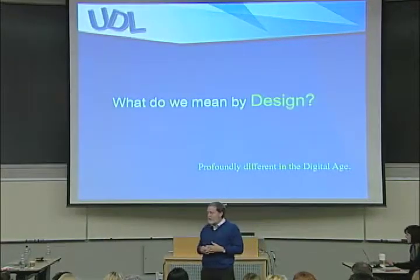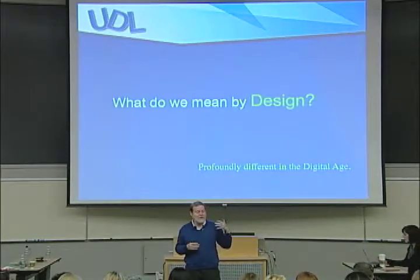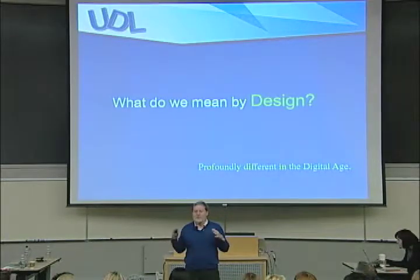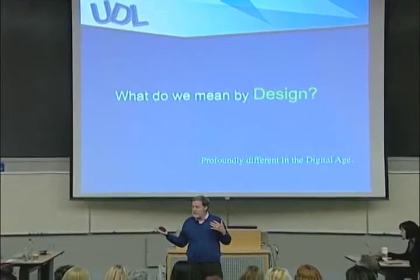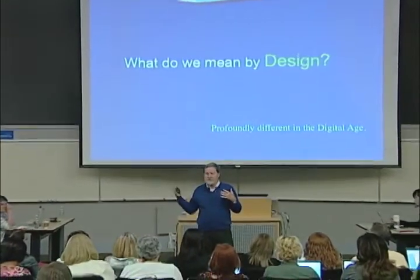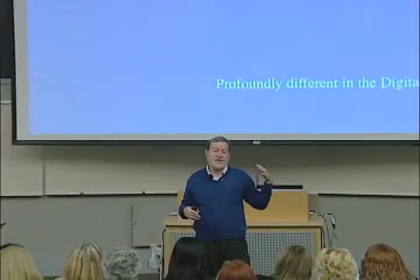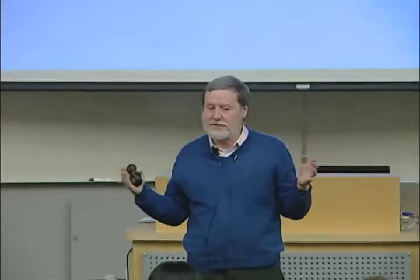Typically when I'm talking about universal design for learning, I talk about the three words: what does universal mean, what does design mean, and what does learning mean. I'm not going to do all three today. But what universal means is how do we make education better for everybody — and that means including kids who have disabilities, gifted kids, kids in the middle. It means everybody.